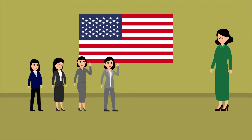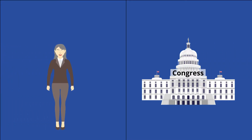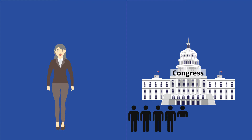Congress uses these vetoes when the president has decided not to sign a bill that Congress agreed on — similar to the list of restaurants Camilla and her sisters submitted to their parents. When this happens, Congress can attempt to override the president's decision.